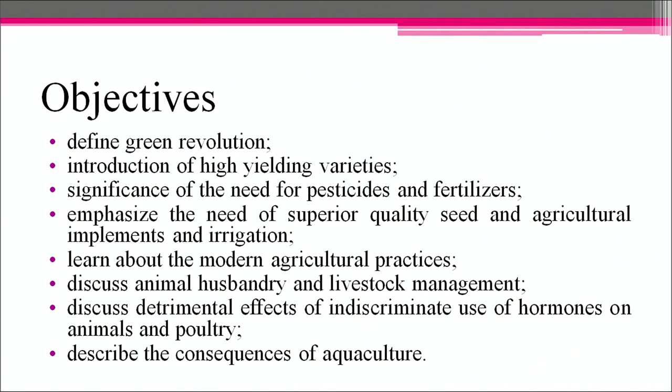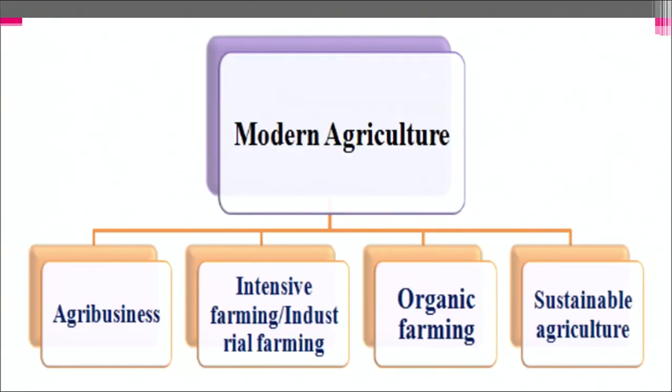We will also discuss animal husbandry and livestock management, discuss detrimental effects of indiscriminate use of hormones on animals and poultry, and describe the consequences of aquaculture. More than 90% of farmers today use the most innovative practices and growing techniques to produce enough food, fuel and fiber for the growing world, while minimizing their environmental footprint. The term modern agriculture depicts their commitment to innovation, stewardship and meeting global food challenges. Modern agriculture includes agribusiness, intensive farming or industrial farming.